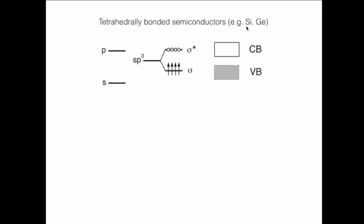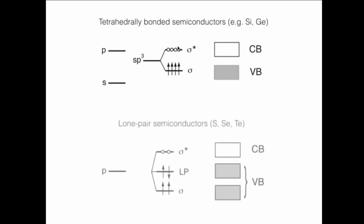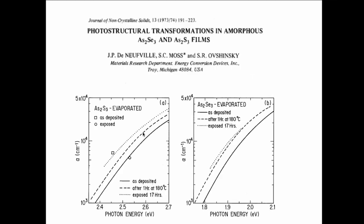For conventional semiconductors like silicon, SP3 hybridization gives four bonding and four anti-bonding states. Optical excitation moves an electron from bonding to anti-bonding, weakening or breaking bonds. For chalcogenides, the top of the valence band is formed by lone pair electrons not involved in bonding. We can excite them without weakening bonds, but we create unpaired electrons and something interesting can happen — for example, structural changes.